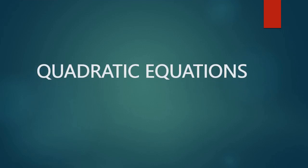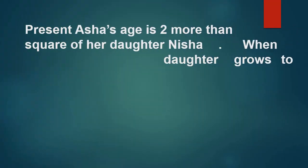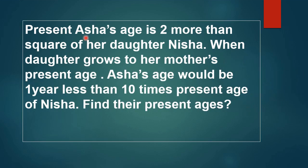Quadratic equations. Present Asha's age is two more than the square of her daughter Nisha. When the daughter grows to her mother's present age, Asha's age would be 1 year less than 10 times the present age of Nisha. Find their present ages.